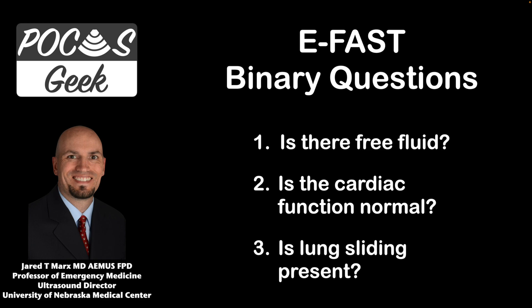The key in an eFAST exam is we're looking for fluid, and this can be in the thorax, the pericardial space, or especially in the intraperitoneal space. We're trying to determine if that fluid is present and if it could mean that they are hemorrhaging in such a way that they need acute intervention. We can also get supplementary information by looking at cardiac function, and we can look for lung sliding, which, if present, rules out a pneumothorax at least in that location.